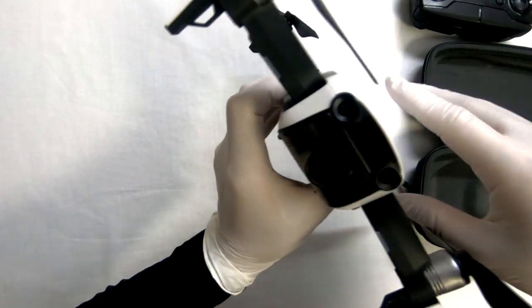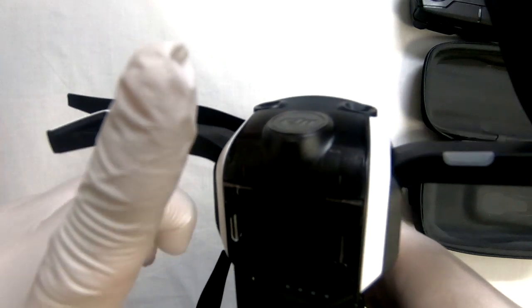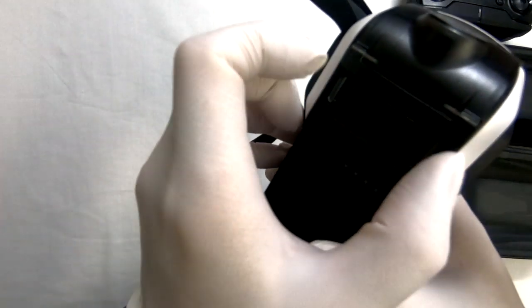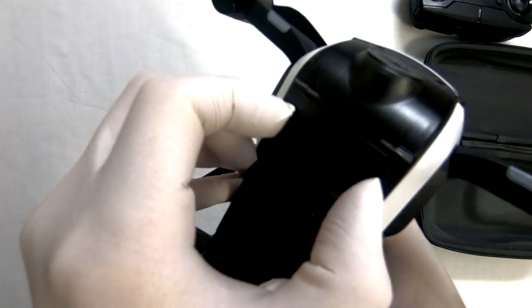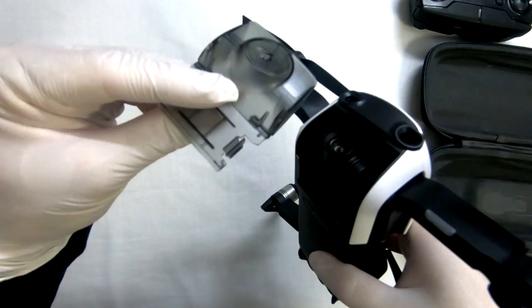Now you'll also want to remember to remove the gimbal guard before you turn on the Mavic Air. Simply squeeze the little tabs and lift up the cover, then push off and it should slide off easily just like that.